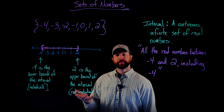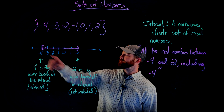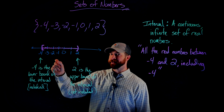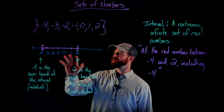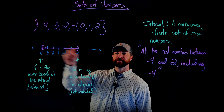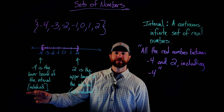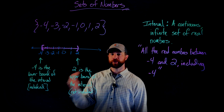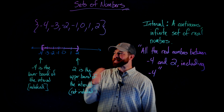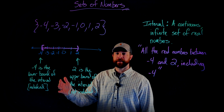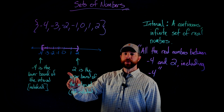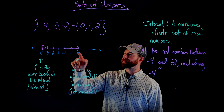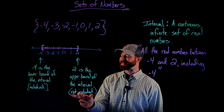Here is how we describe that on the number line. I have put a bracket on the negative 4, which means negative 4 is a value that is included in this set of numbers. We call negative 4 the lower bound of the set — it is the smallest or least number in this set. 2 is the upper bound; it's the largest possible number, though we put a parenthesis here to indicate it's not included.